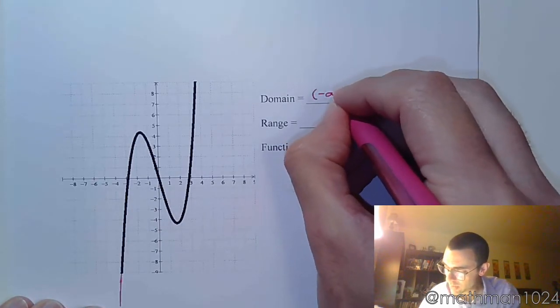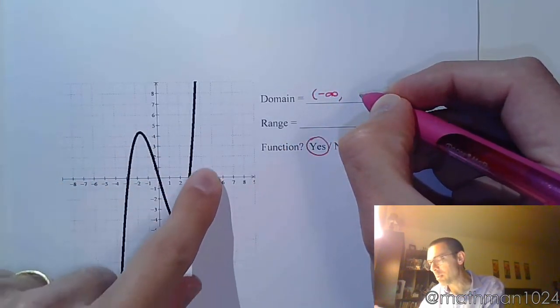But he is still going out to the left. So he's coming from negative infinity. No breaks, no gaps. He's going to keep on going.